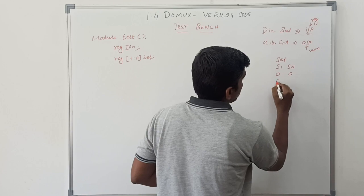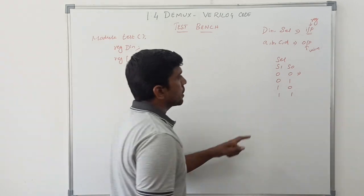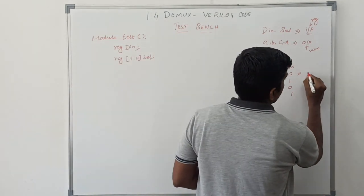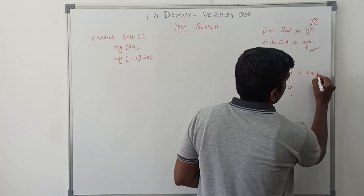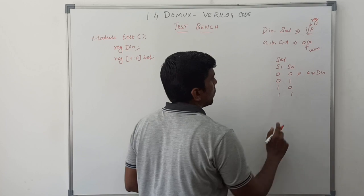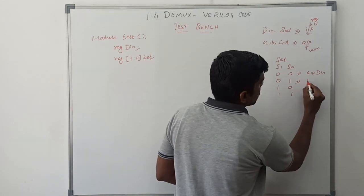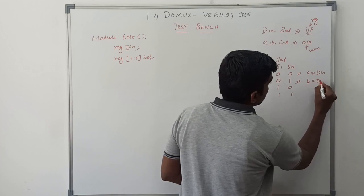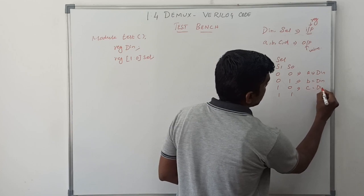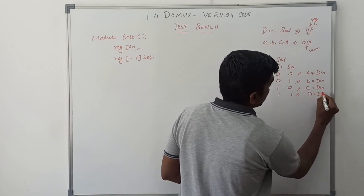The selection line combinations are: S1 S0 = 0,0 — output A is connected to D_in. If 0,1 — then B equals D_in. If 1,0 — C equals D_in. If 1,1 — D equals D_in.